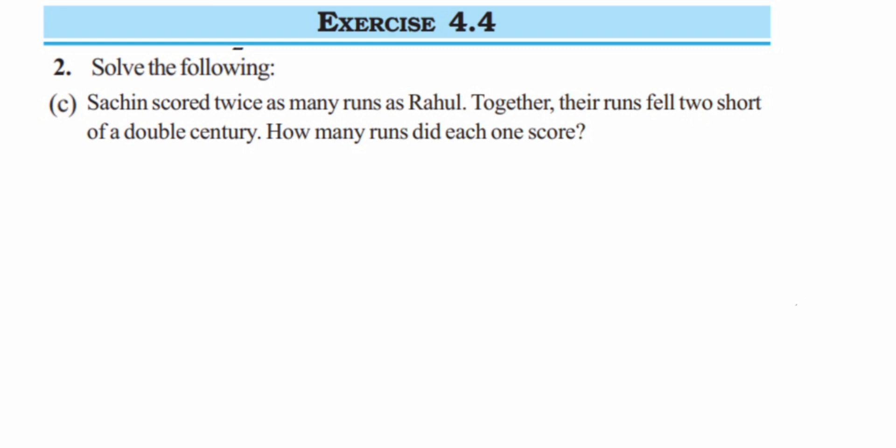So let's start solving. We're going to assume: Let Rahul's score be equal to X. Now, since we're comparing Sachin—Sachin's score is twice Rahul's score—we can say therefore Sachin's score will be double of Rahul, which will be nothing but 2X.